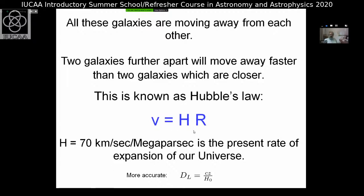V equals H times R is a crude approximation; the exact Hubble's law is more precise. H is the Hubble parameter, which varies with time. At the present time it's about 70 kilometers per second per megaparsec. This is the present rate of expansion of our universe.